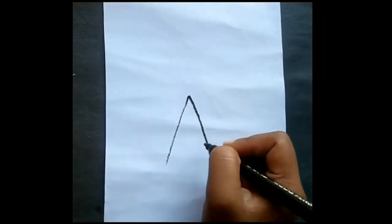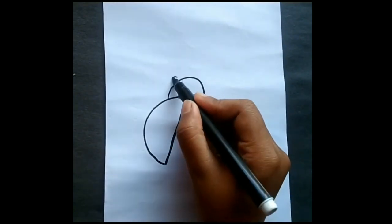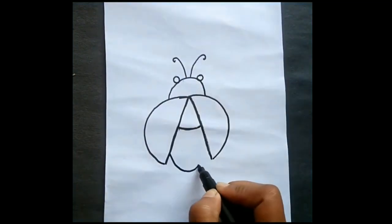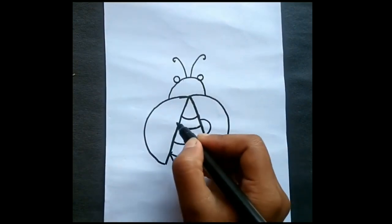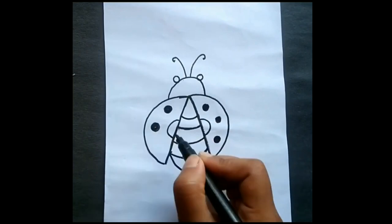First write an A. Then draw a C and an inverted C. Draw an inverted U in the middle. Then draw 2 small U's as eyes. Then draw 2 tentacles. Write a U at the bottom to connect them. Then draw a small C and a small inverted C. And finally draw 6 O's. Ladybug finished.